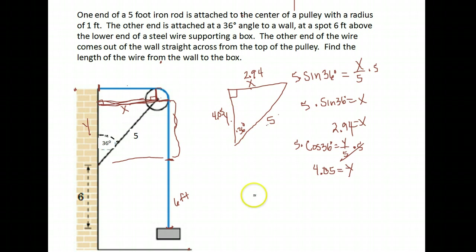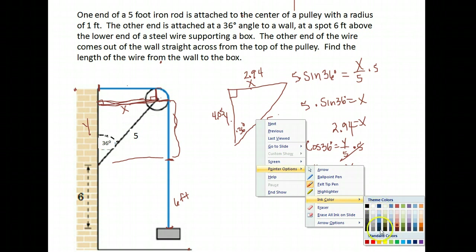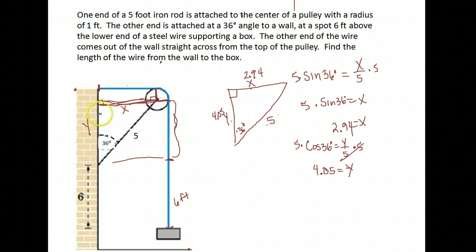I'm going to transfer these numbers back over to my figure. This distance here we found was 2.94, which made this distance, because the opposite sides of a rectangle are congruent, 2.94. There's one of our lengths that we needed to have.